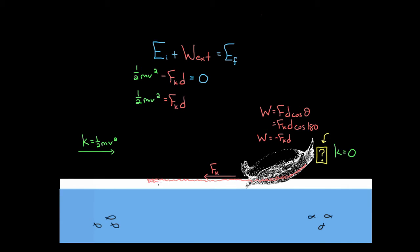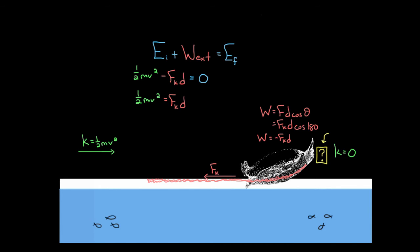Some people might object: we just said there was thermal energy to end with — how come we didn't include that in our final energy? The reason is that in this calculation, we assumed that Walter and only Walter was part of our energy system — only his kinetic energy was being tracked. The sheet of ice was external to our system, not part of it. That's why it exerted a negative external work, removed the energy from the system, and Walter ended up with no kinetic energy.